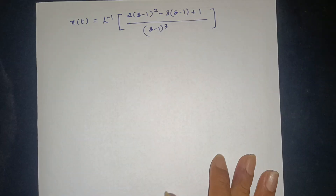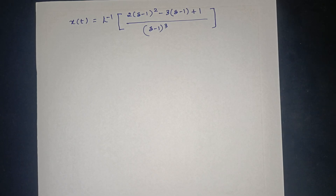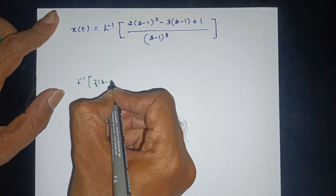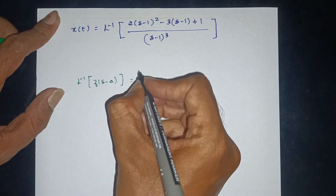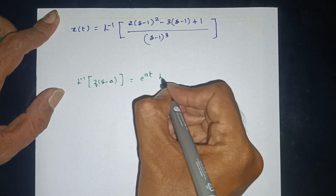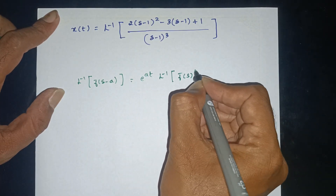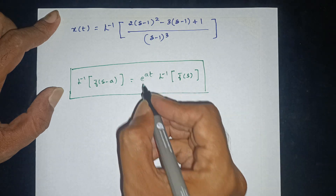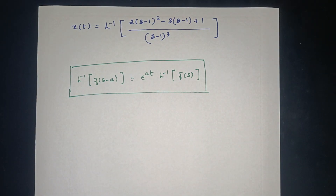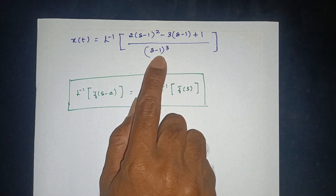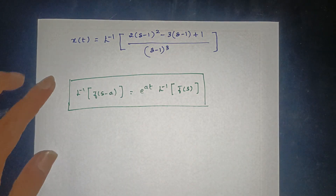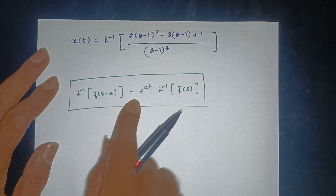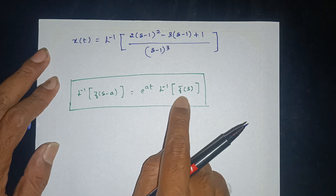Using the first shifting theorem: Laplace inverse of F(s-a) equals e^(at) times Laplace inverse of F(s). Here a equals 1, so the function of (s-1) becomes e^t times the Laplace inverse of the corresponding function of s.